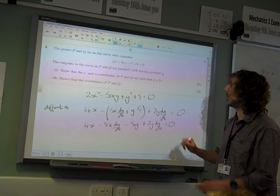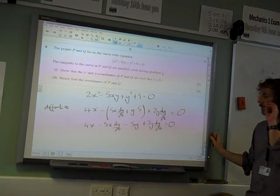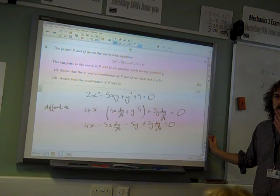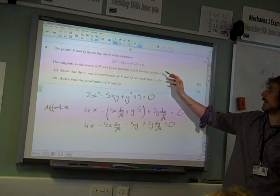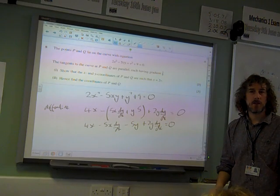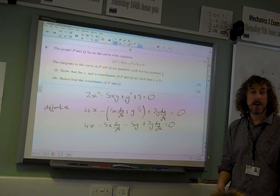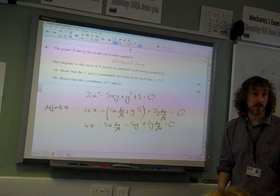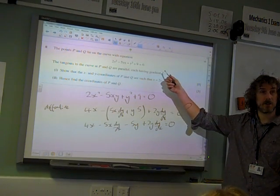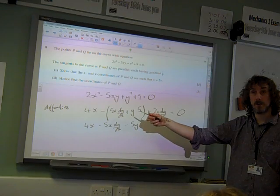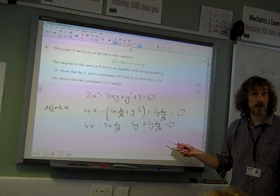Where are we going with this? We're interested in when the gradient is 3/8 - that's what happens at P and Q. What we could do at this point, it'd be a bit radical, but we could just substitute dy/dx equals 3/8.